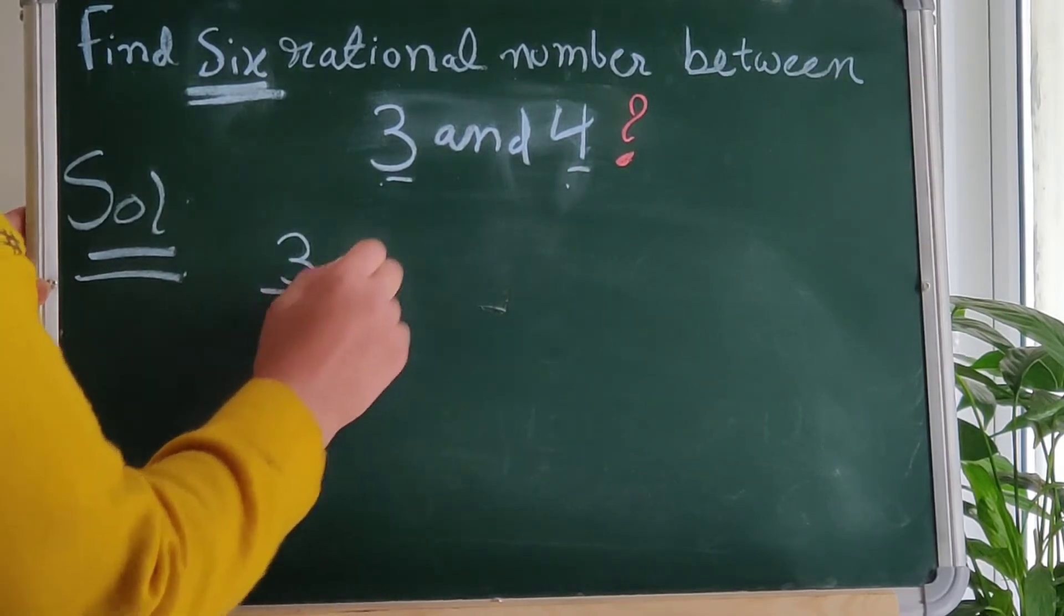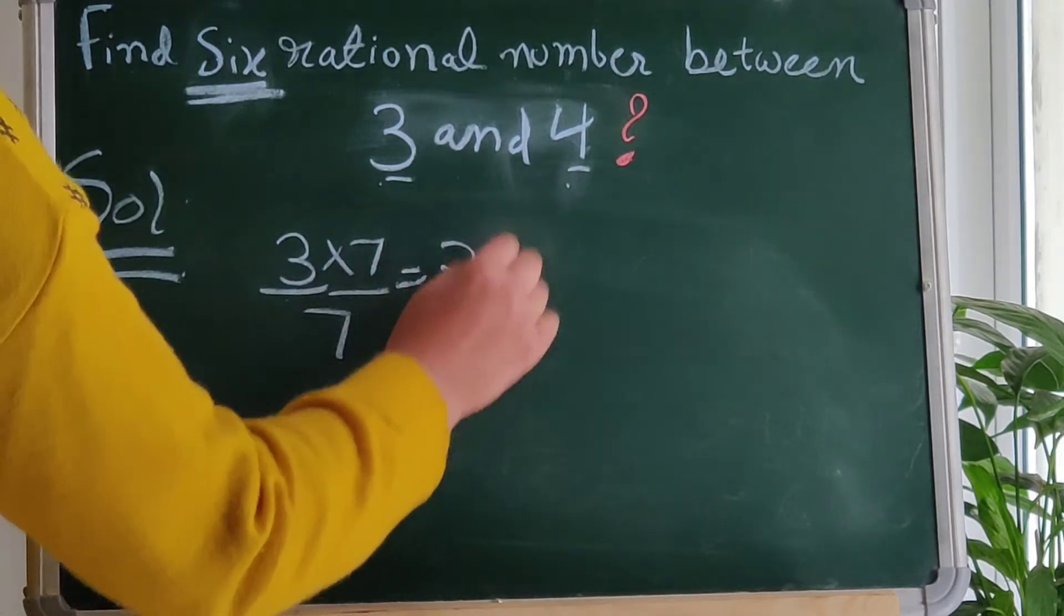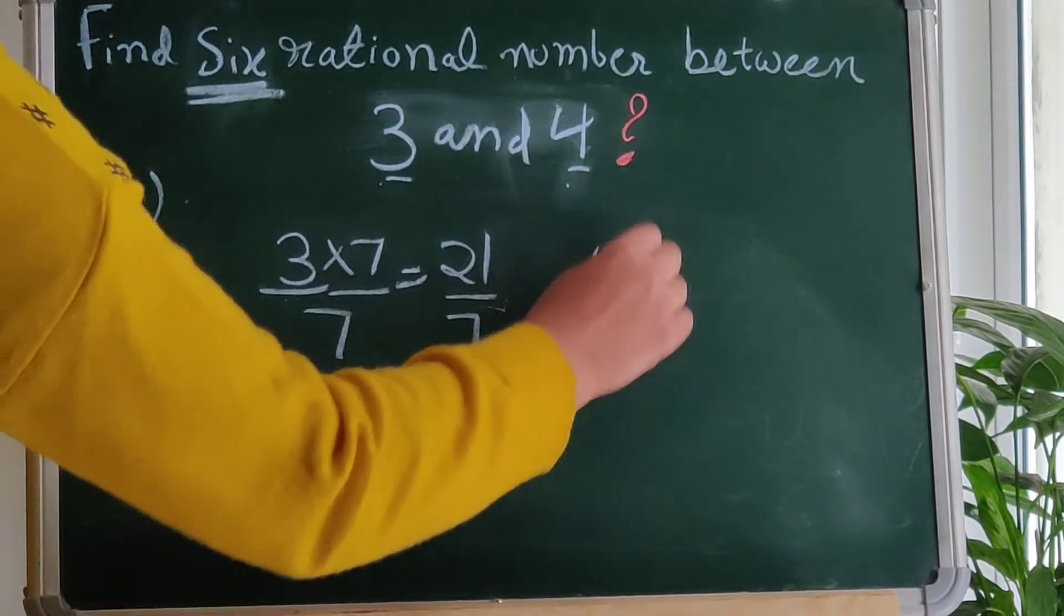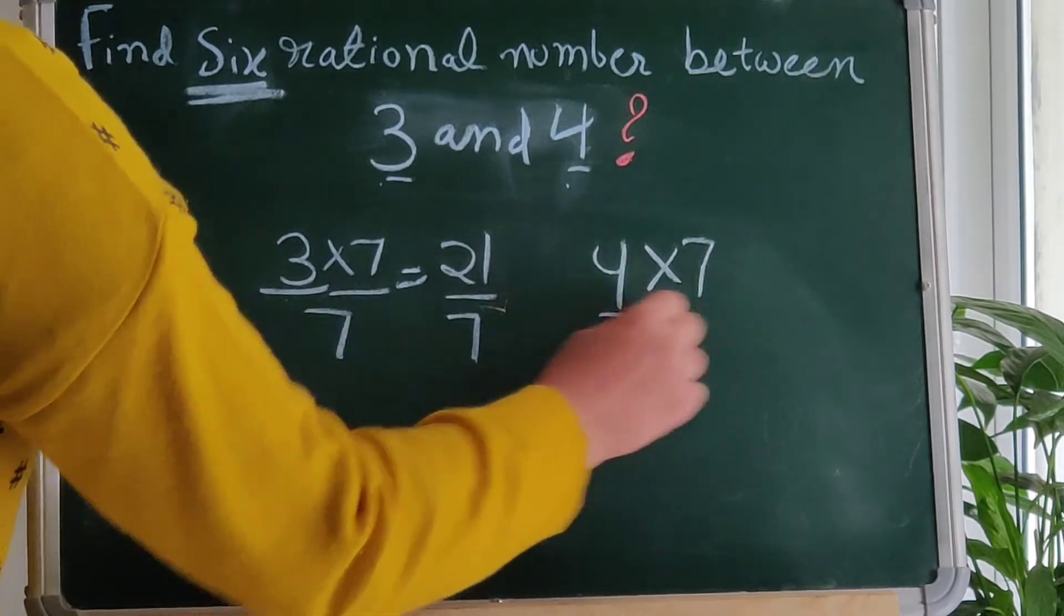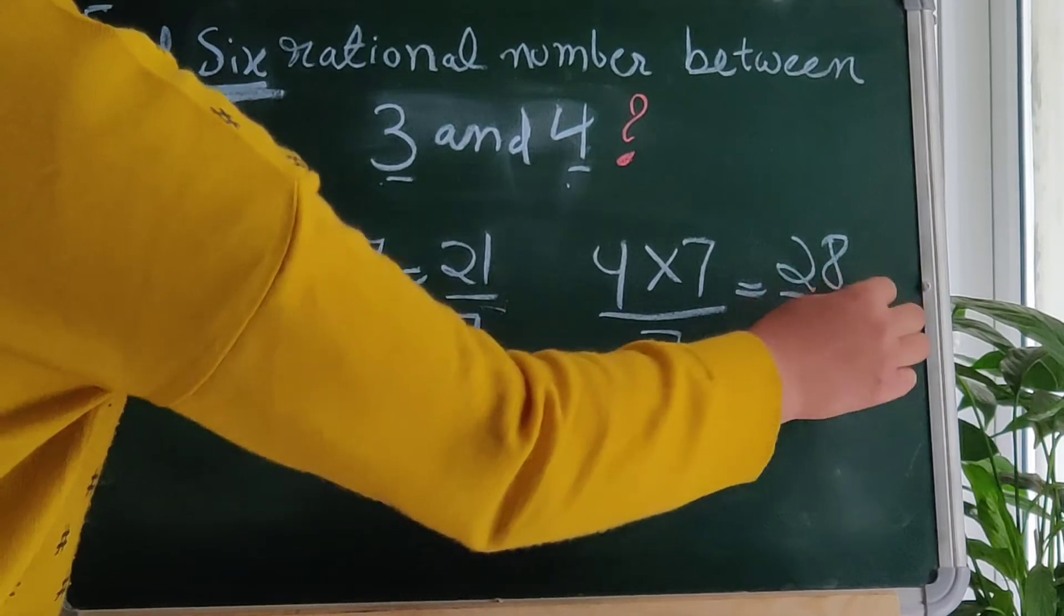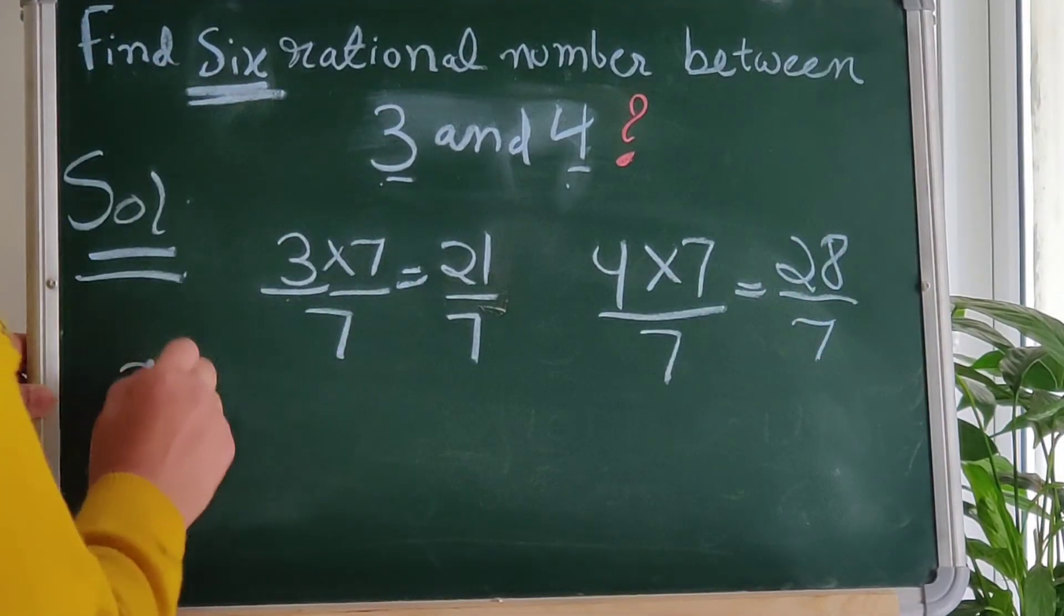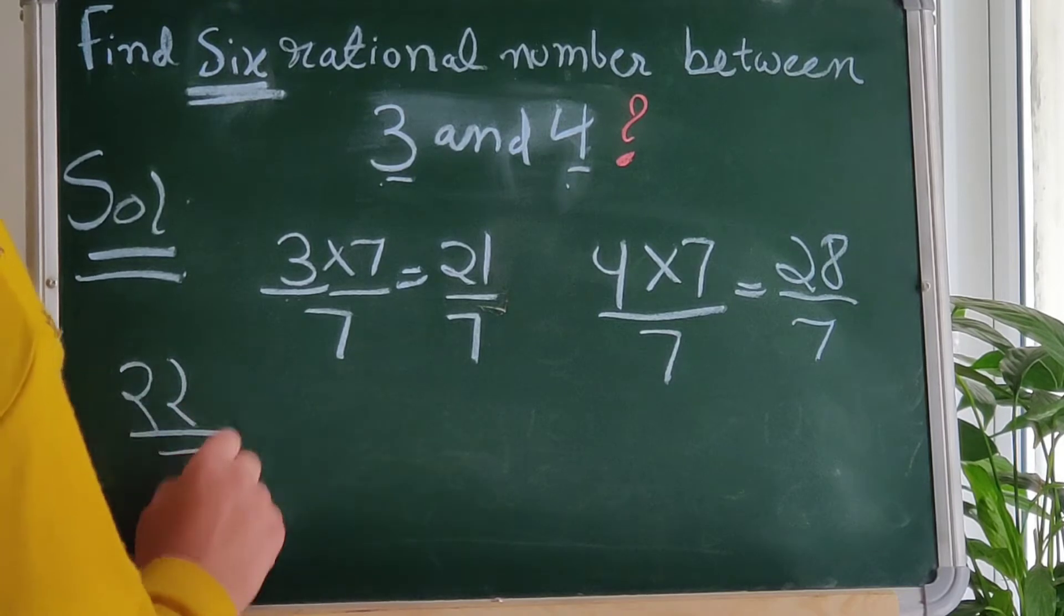3 multiply and divide by 7 is equal to 21 by 7. 4 multiply and divide by 7 is equal to 28 by 7. So 6 rational numbers between these numbers are 22 by 7,